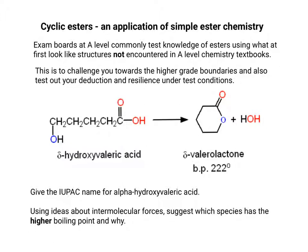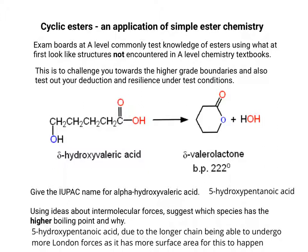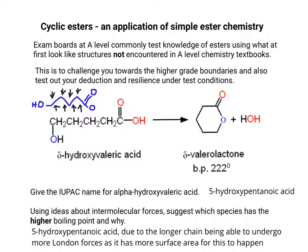Here's an example of a straight chain hydroxycarboxylic acid being turned into a cyclic ester because it esterifies with itself. This is essentially what we talked about in the last slide. The name of the acid is 5-hydroxypentanoic acid. You count from the carbon that is the COOH group — that's carbon number one — and count along. In that particular structure there's more surface area over which London forces can take place, and you've also got hydrogen bonding occurring both at the alcohol functional group and at the carboxylic acid functional group.